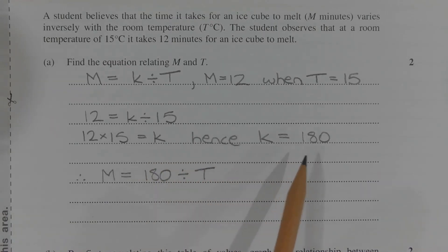Hence, k is equal to 180. Therefore, the equation is m equals 180 divided by T.